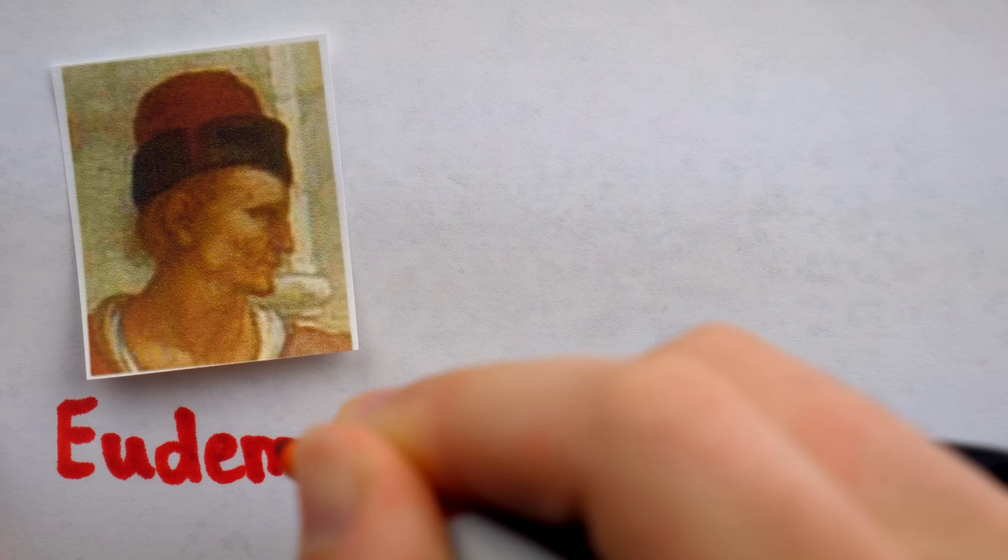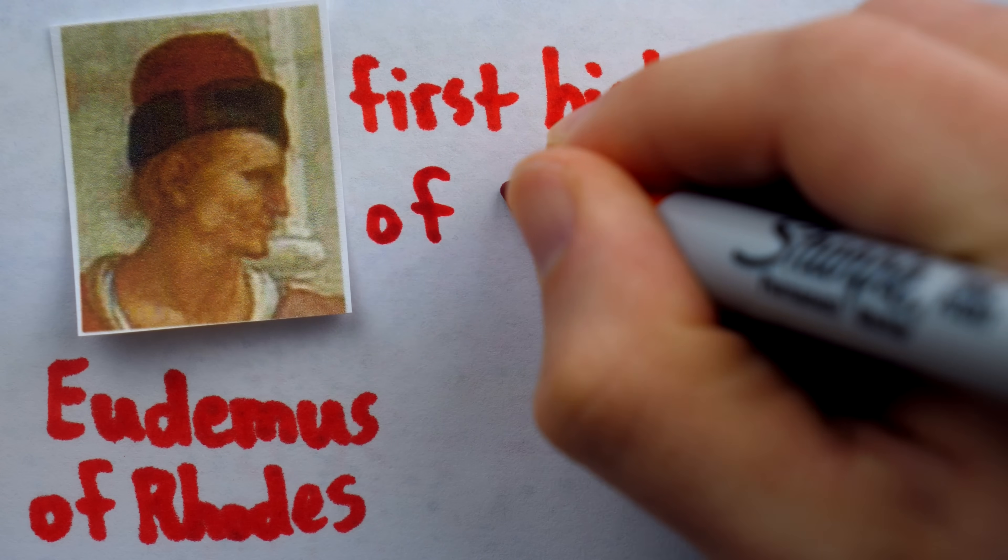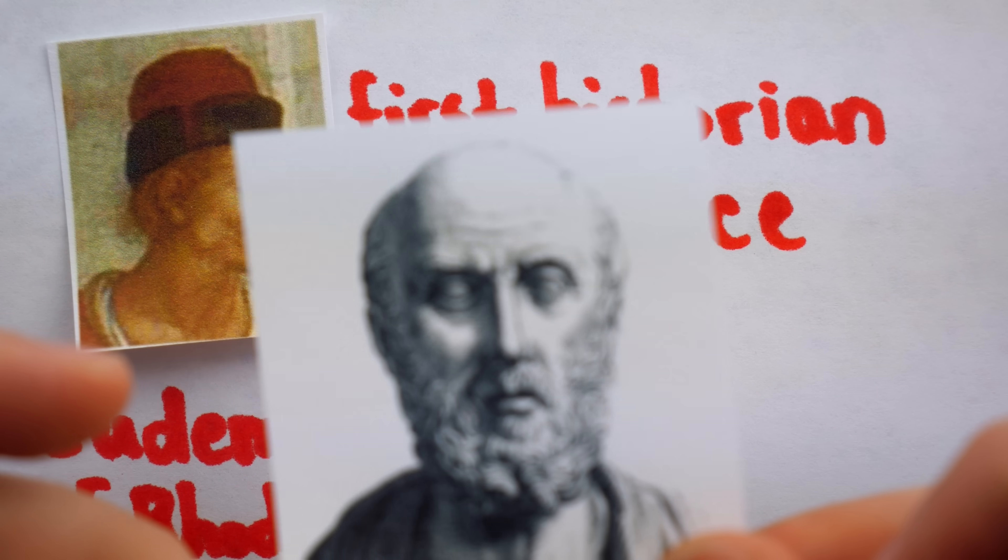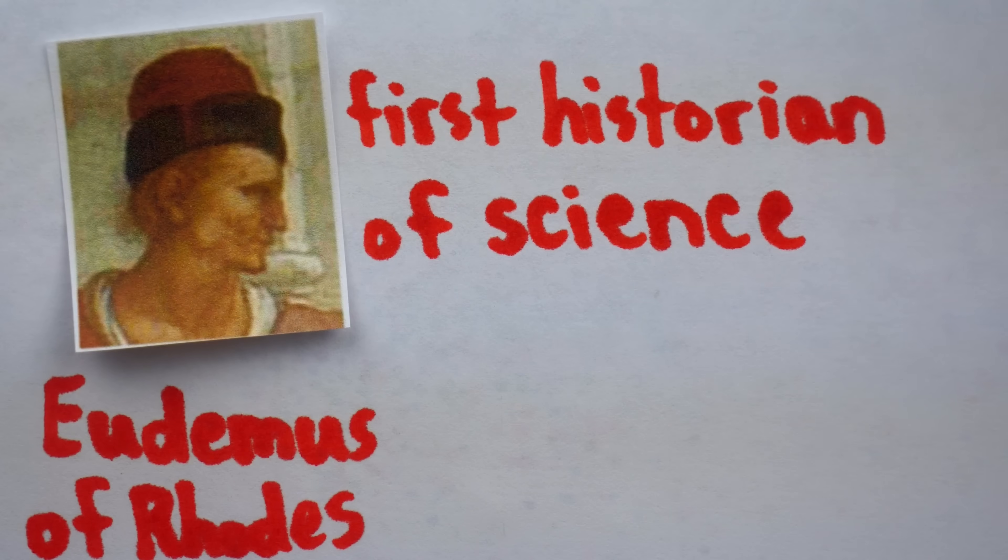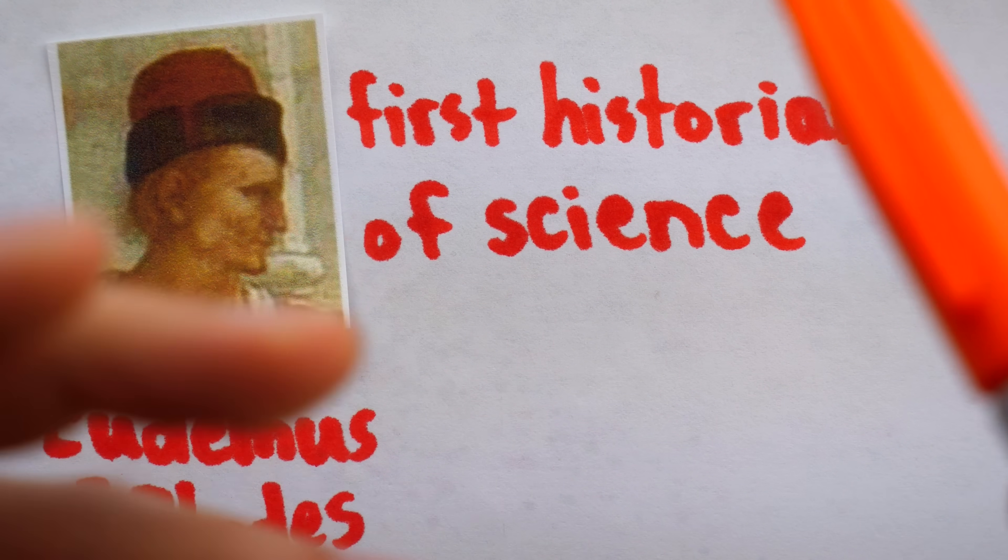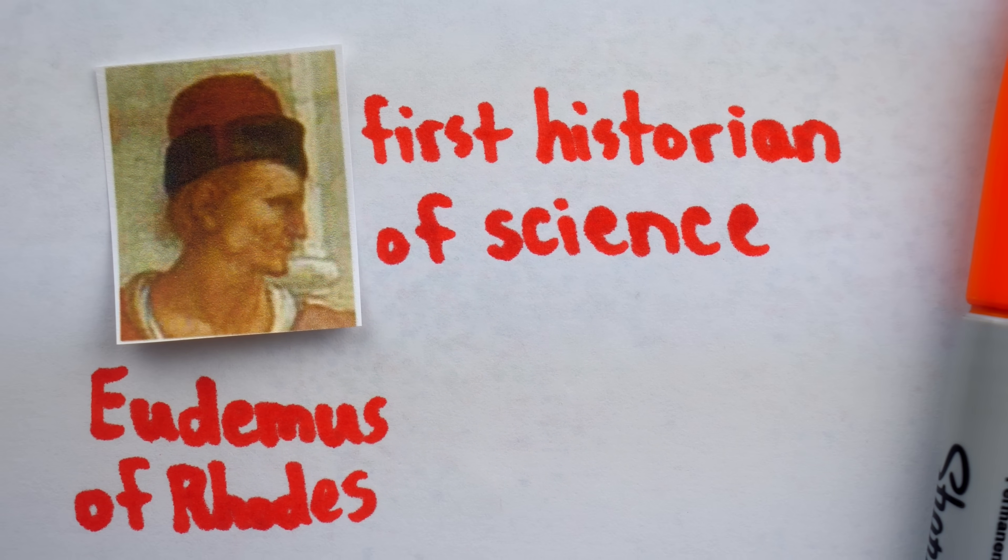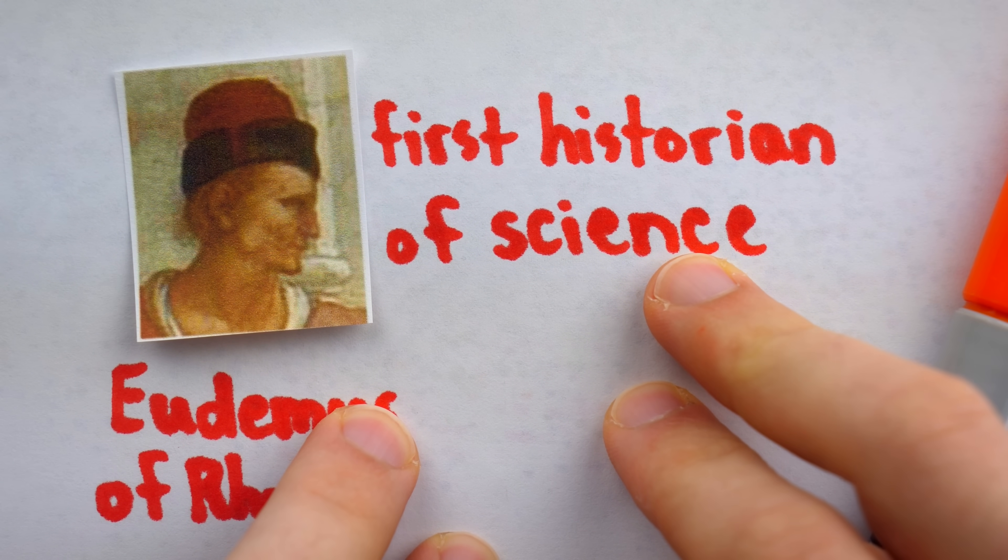This is Eudemus of Rhodes, a pupil of Aristotle, and perhaps the first historian of science. And although Hippocrates' work was lost, one of his proofs was preserved in Eudemus' history of geometry. But all of Eudemus' work was also lost. No matter, there is still a hero who remains.